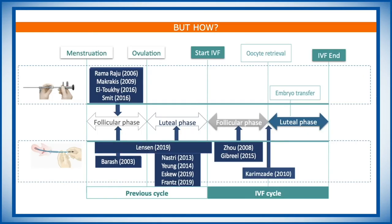However, if we scratch, the next question is how to scratch. All of the studies that have been performed are very scattered. You can scratch with a pipelle biopsy. You can have a scratching-like effect by performing a hysteroscopy. And then you also have to take into account the moment of the cycle in which the intervention is done. For scratching, in the beginning, there were small RCTs showing a beneficial effect.